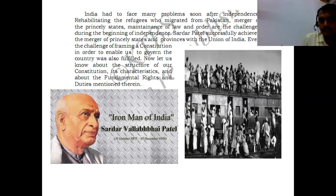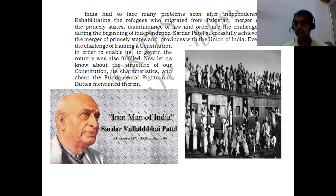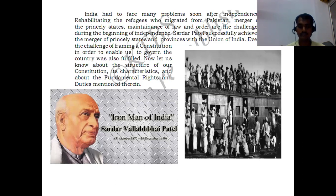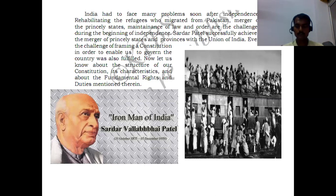He took the initiative of uniting India under one head and successfully succeeded in that task. There were 565 self-governing states at that time after independence. The Iron Man of India, Sardar Vallabhbhai Patel, took a lot of effort to unite these 565 self-governing princely states and add them into one nation. He worked as the first Home Minister of the Indian government and was the Deputy Prime Minister to Jawaharlal Nehru. Sardar Patel successfully achieved the merger of the princely states and provinces with the Union of India.